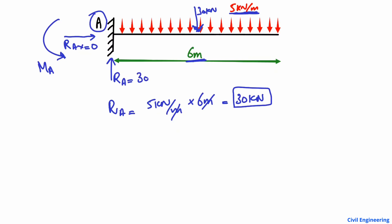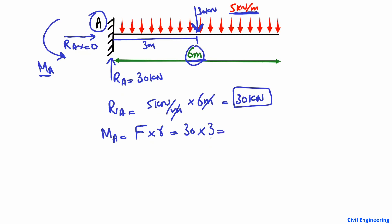Now to find the moment at point A: the moment equals force multiplied by the moment arm. The total force acting on the beam is 30 kN. This load always acts at the centroid, which is at the center of the 6-meter beam — that is 3 meters from A. So 30 kN multiplied by 3 meters gives us 90 kN·m as the moment at point A.